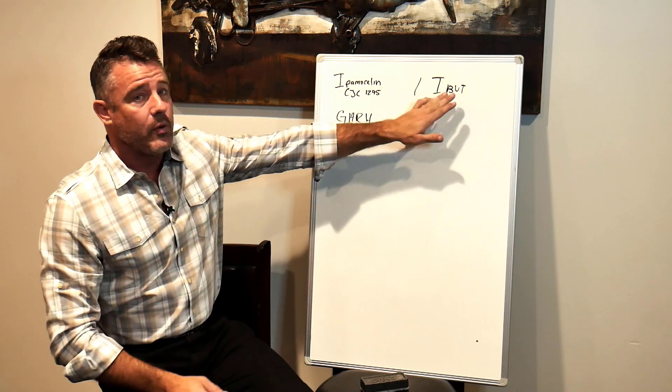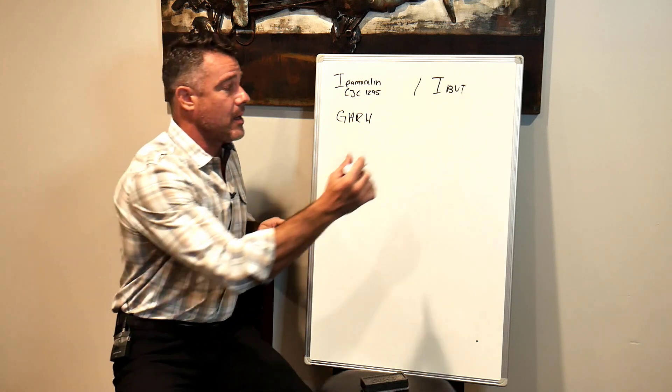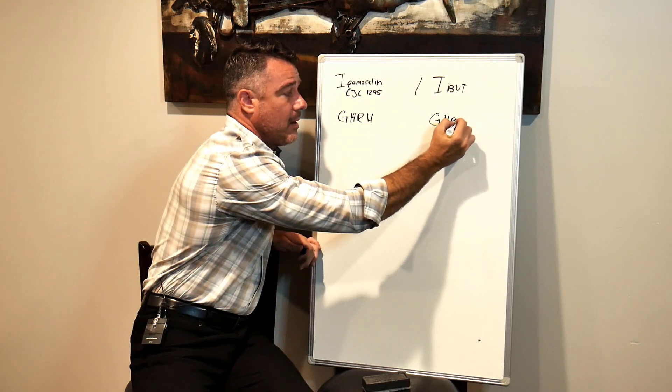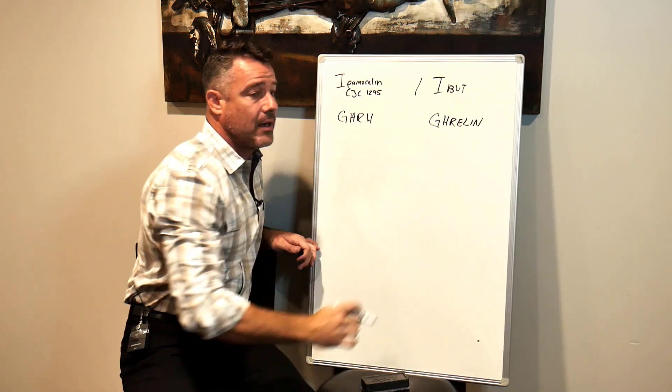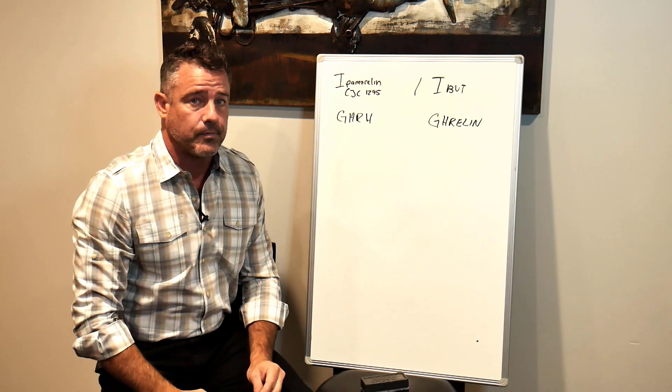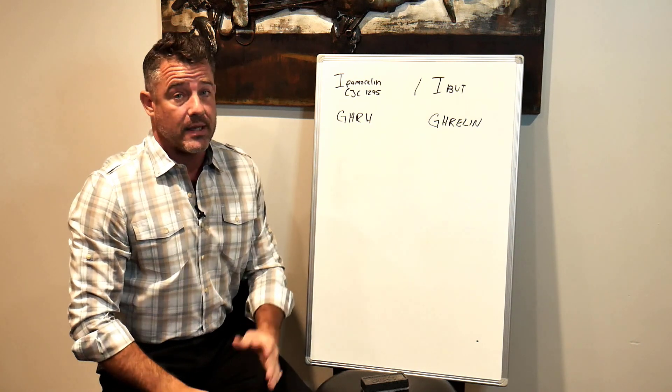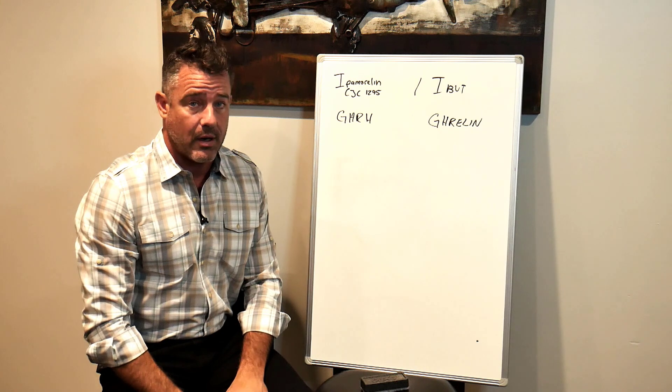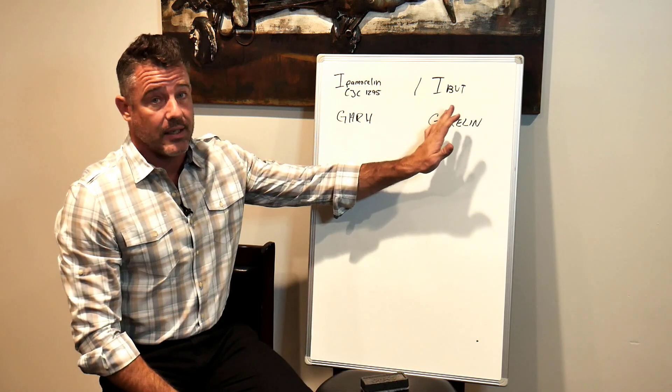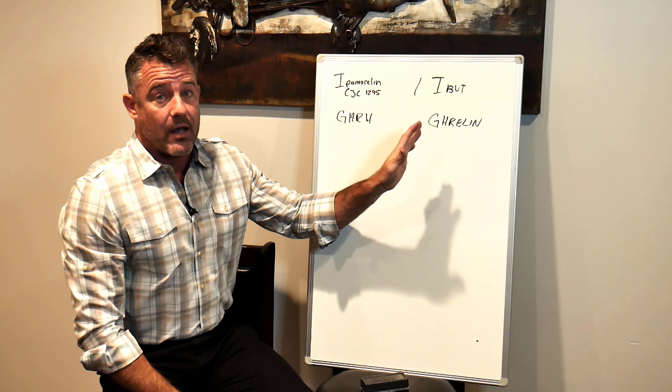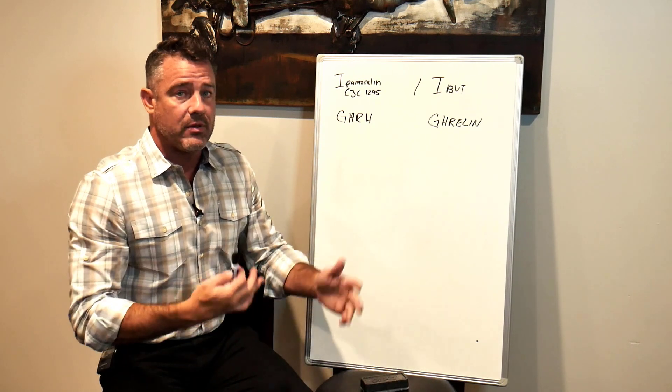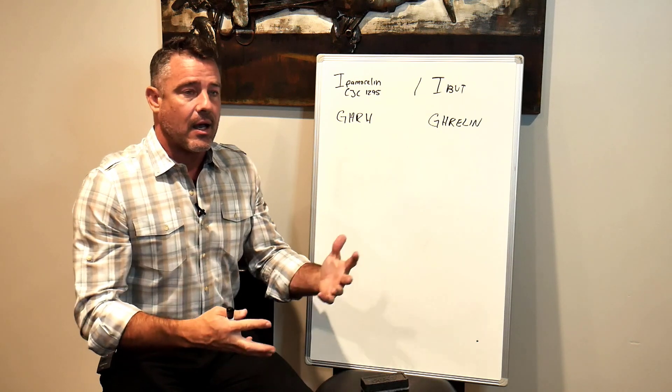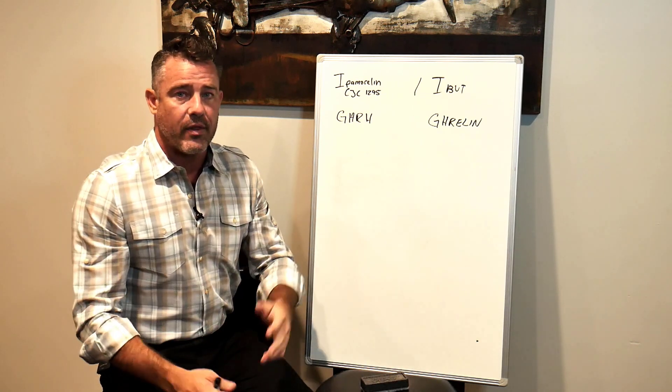That's how that works. Ibutamoren is a ghrelin mimic. But the problem with that is ghrelin is a hunger hormone. Now, for some people, that's not a problem. If you're the guy trying to eat four or five thousand calories a day to put on a lot of mass, this is a godsend for you. It will make you eat yourself out of house and home. It affects different people differently. And one way to get around this is if you take it at night, it really diminishes the hunger throughout the next day.